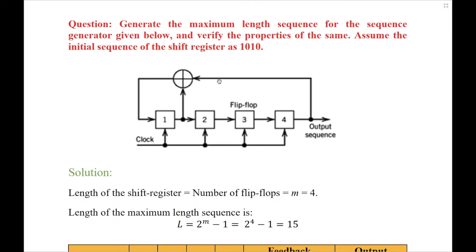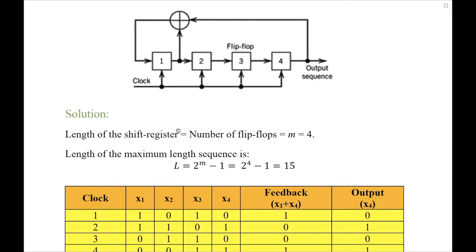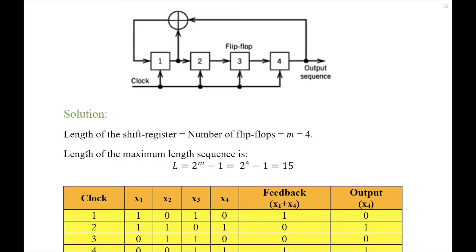Looking at the maximum length sequence generator here, we have the length of the shift register equal to 4, because it is the number of flip-flops in the shift register. The feedback is taken from the outputs of the first and the last flip-flop, and we have a common clock for all of the flip-flops. The solution starts by identifying the length of the shift register, which is equal to the number of flip-flops, denoted by m, and is equal to 4.